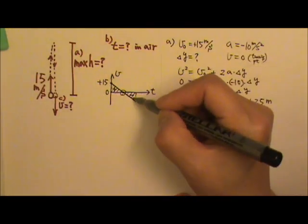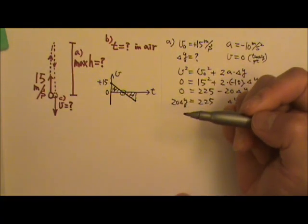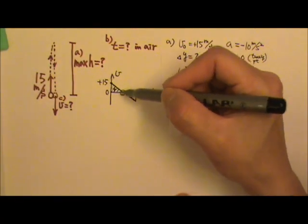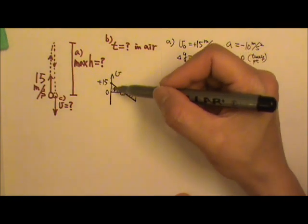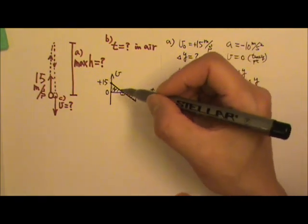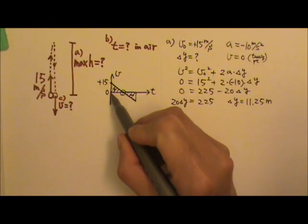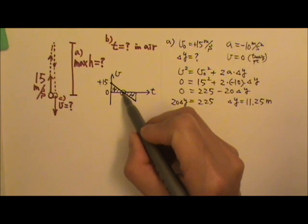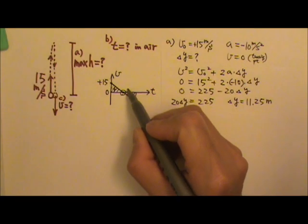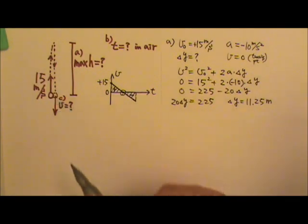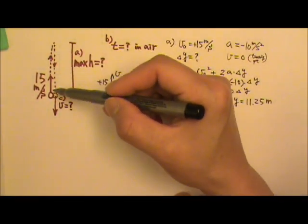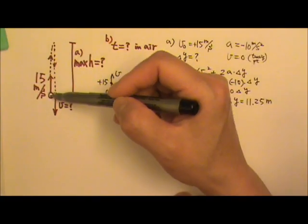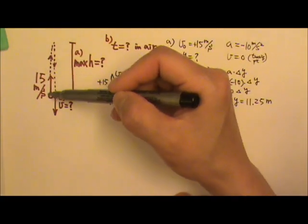It's just going to be a negative displacement. If these two triangles have the same area, and because they are similar triangles, that means they must be congruent. That means however much time it takes to go to the maximum height, it would take exactly the same amount of time to come back down to the starting position. So if I want to find the total time in air, I can just find the time to the maximum height and then double it.